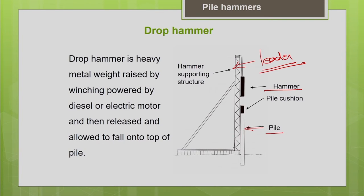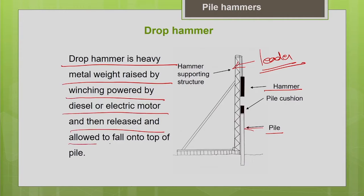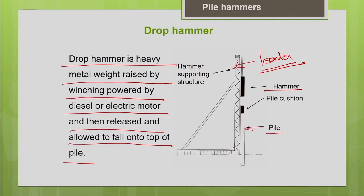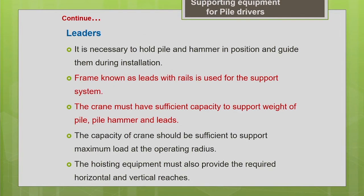To summarize: the drop hammer is a heavy metal weight, raised by winching powered by a diesel or electric motor, then released and allowed to fall onto the top of the pile. The winching mechanism is a rotating drum rotated by a motor. It is necessary to hold the pile and hammer in position and guide them during installation, for which we need the frame known as the lead, which has a rail-like arrangement and is used as a support system for the pile driving operation.